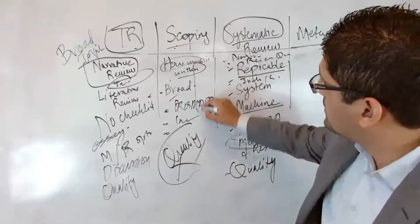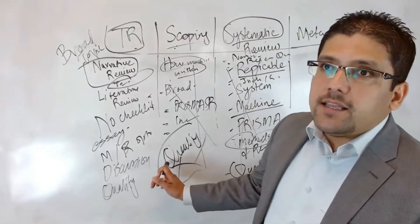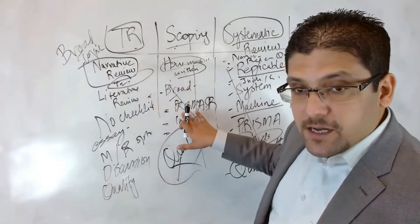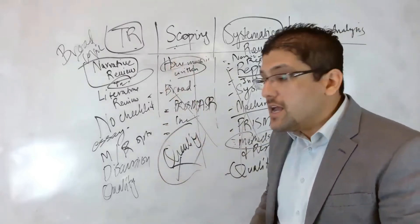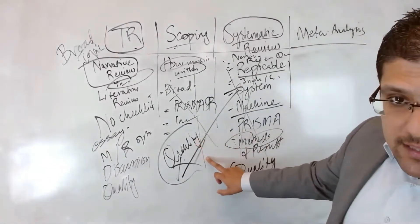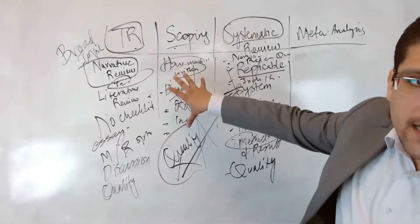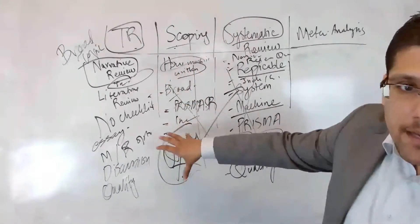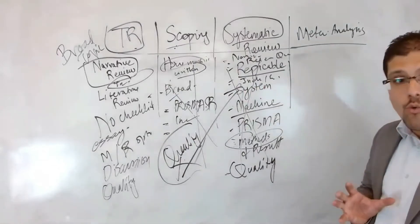If your paper has a narrow research question but you did not check quality, it is neither a scoping review nor a systematic review — your study design is wrong. If you plan not to check quality, the topic must be broad. A scoping review is a precursor to a systematic review: once you confirm there is enough literature on a topic, you can then narrow it down and write a systematic review.